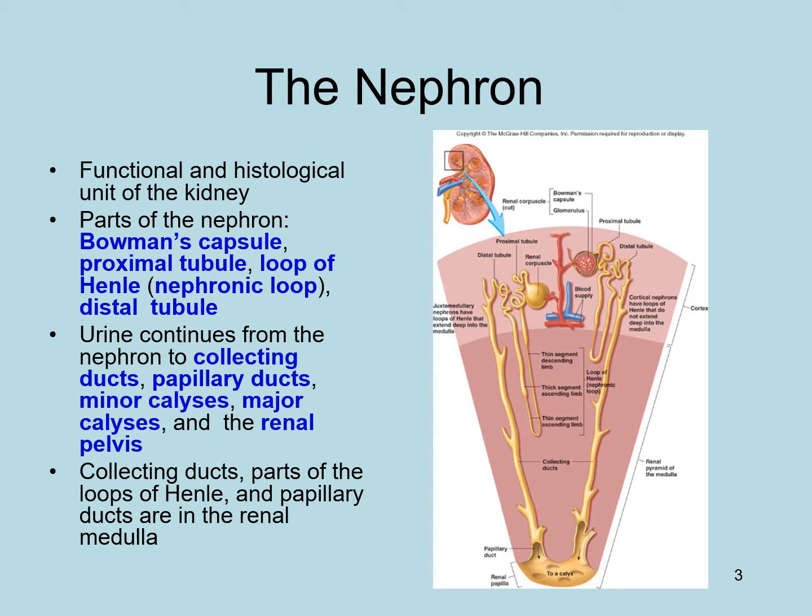The structural and functional unit in the kidney is the nephron. Each kidney contains about 1 million nephrons, so both kidneys together contain about 2 million nephrons. The nephron consists of Bowman's capsule, proximal tubule, loop of Henle, and distal tubule — collectively the tubular system.